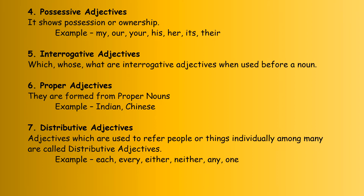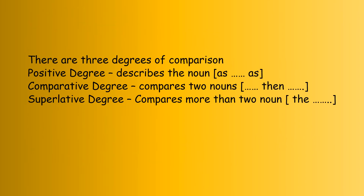As you learned last year, there are three degrees of comparison. The first is positive degree, the second is comparative degree, and the third is superlative degree. Positive degree simply describes a noun — for example, 'as tall as.' Comparative degree compares two nouns and uses the word 'than,' for example, 'taller than.' Superlative degree compares more than two nouns — for example, 'the tallest.'